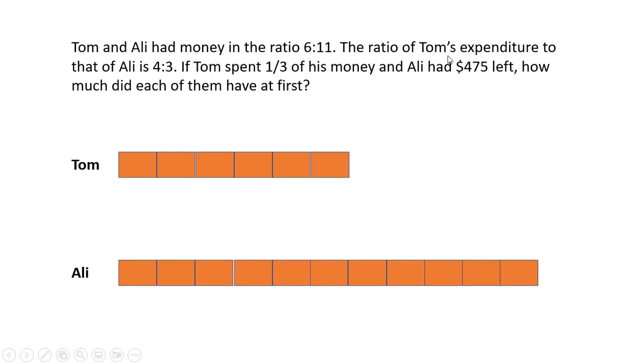Now the ratio of Tom's expenditure to that of Ali is 4 is to 3. We do not know how big we have to draw a model for this, so let's try to understand the next statement.